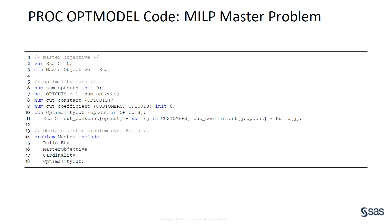The PROC OPT MODEL code shown here defines the MILP master problem. There is a new non-negative variable called eta, and the objective is to minimize eta. For the p-median problem, the subproblem is always feasible, so the master problem does not include any feasibility cuts, but it does include optimality cuts, which are generated dynamically. Initially, the numeric parameter numoptcuts is zero, and so the set optcuts is empty. The optimality cut constraints are declared only once and are automatically updated when numoptcuts changes. The problem statement declares a problem called master that contains the build variables and cardinality constraint declared earlier, as well as the eta variable, master objective, and optimality cuts declared in this slide.